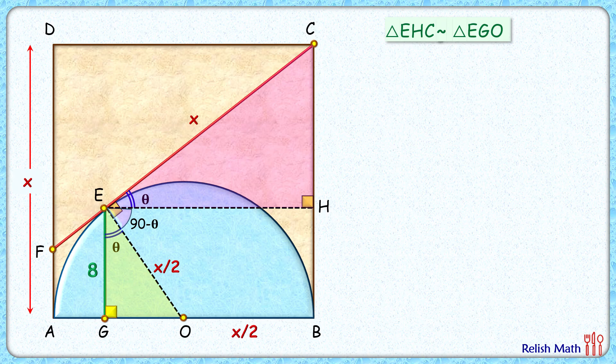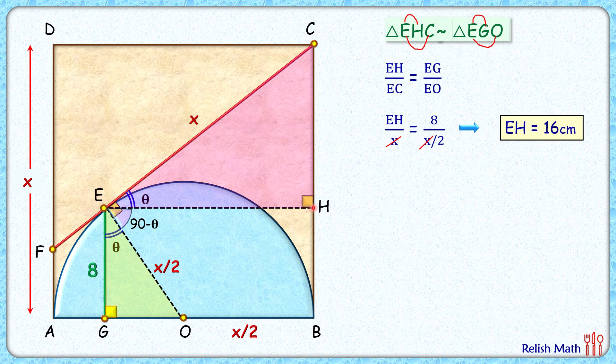As the triangles are similar, the ratio of corresponding sides will be equal. So here we can say that EH upon EC will be equal to EG upon EO. Now putting the values here, EC length is x centimeters, EG is 8, and EO is x by 2. Simplifying it, both the side x will get cancelled and we'll get EH length as 16 centimeters.